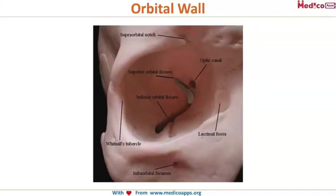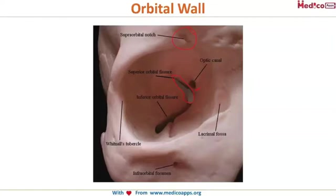The structure you are seeing here is the superior orbital notch, and the hole-like structure here is the optic canal. This tiny opening is the superior orbital fissure, which allows many important structures of the eye to pass through. Just below this is the inferior orbital fissure, and this is the lacrimal fossa, the whitnall's tubercle, and obviously the infraorbital foramen.